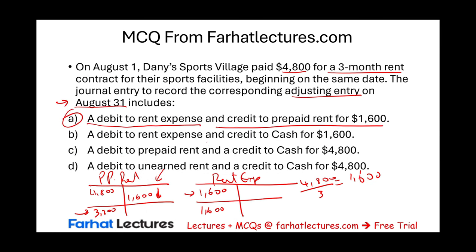Looking at the other answer choices: a debit to rent expense and credit to cash — no, there's no cash involved on August 31st. A debit to prepaid rent and credit to cash for $4,800 — that's the entry to initially acquire the prepaid, not the adjustment a month later. A debit to unearned rent and credit to cash — there's no unearned rent here and no cash paid on August 31st. We'll talk about unearned revenue down the road.